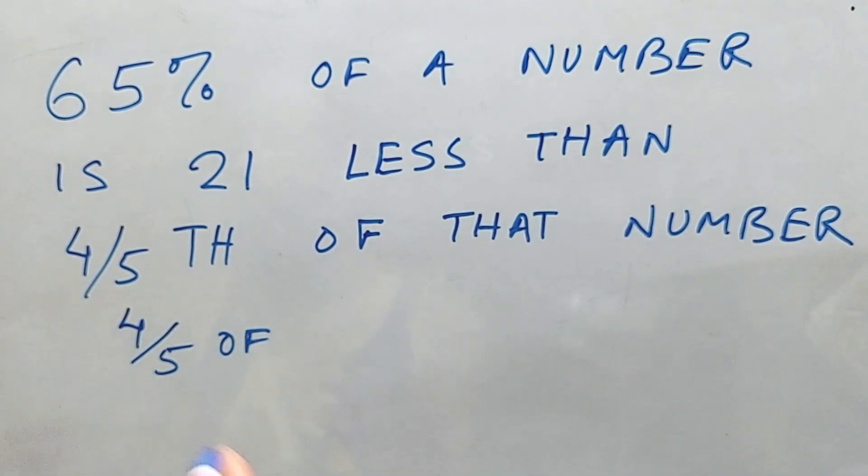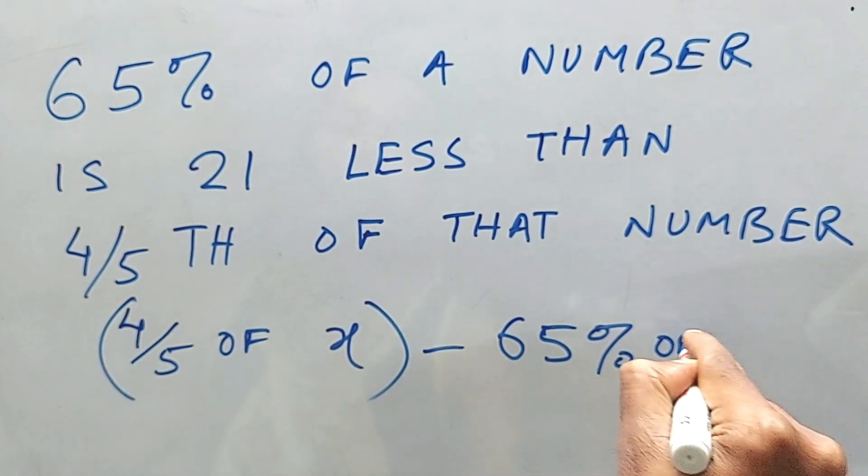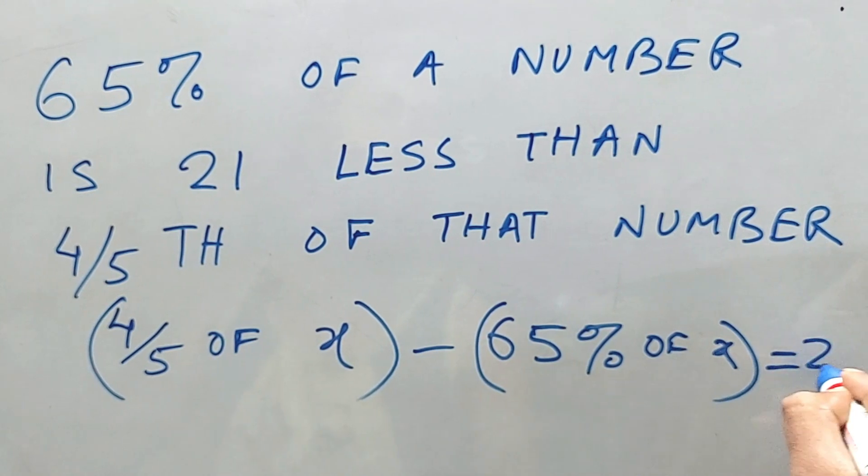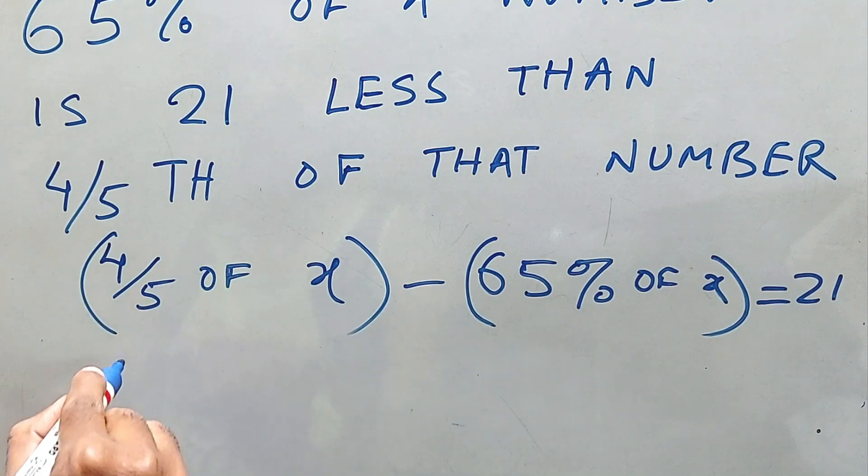Say the number is x. Four-fifths of x minus 65 percent of x is equal to 21. Finding this equation will be a great challenge sometimes.